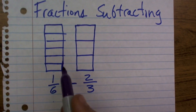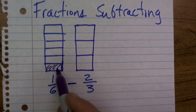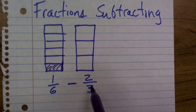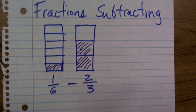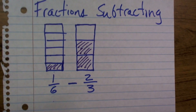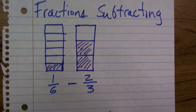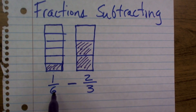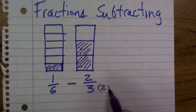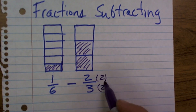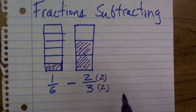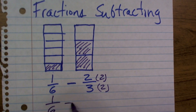Let me show you what one sixth would look like, and two thirds is going to look something like this. So if I have one sixth minus two thirds, I've got to first make them into equivalent fractions. So I'm going to change this to be sixths, so therefore my denominators will be the same. Whenever I multiply my denominator by a number, I need to multiply my numerator. So therefore I'll have one sixth minus four sixths.